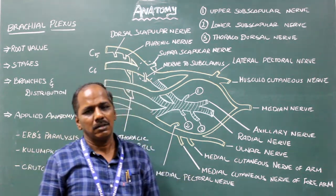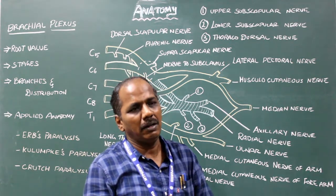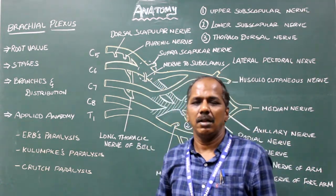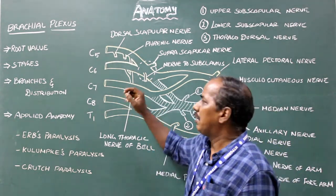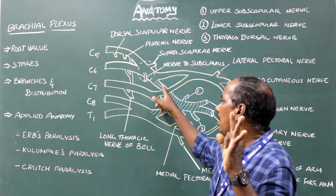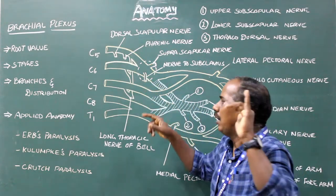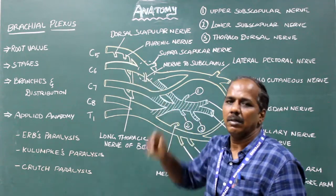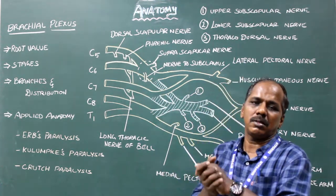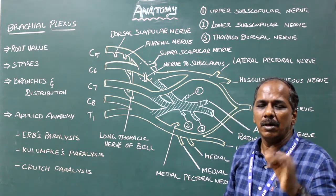Erb's Paralysis. Injury to Erb's point results in Erb's paralysis. Erb's point is the meeting point of six nerves: C5, C6, the anterior and posterior divisions of the upper trunk, the suprascapular nerve, and the nerve to subclavius. Causes include breach delivery and a huge fall on the shoulder.